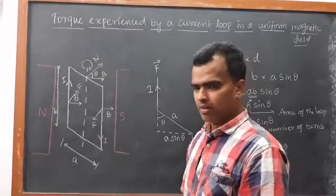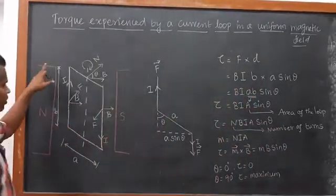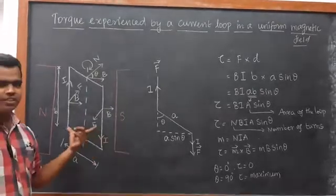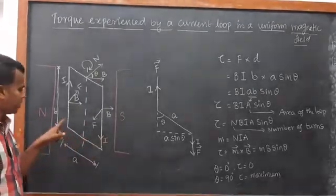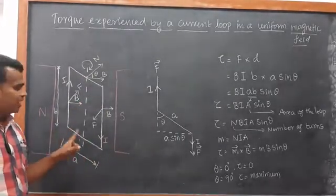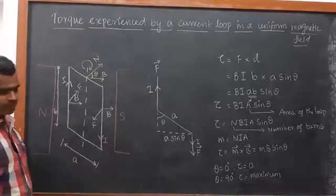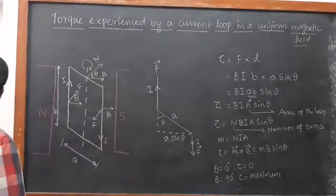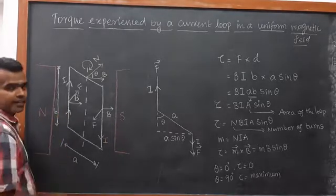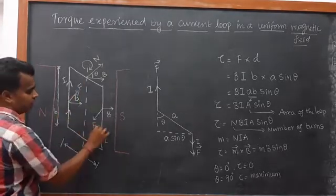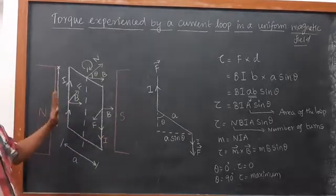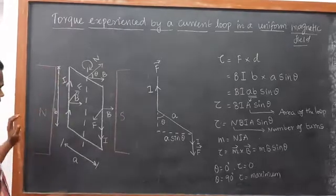In this diagram I have drawn two poles — this is the north pole and this is the south pole. Between these poles I have drawn one rectangular coil, and I am passing current through that coil. The current goes down in this direction.